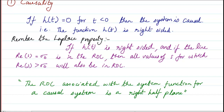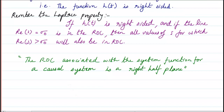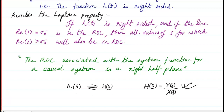That means the function h(t) exists only for positive values of t. From this, we can state: the ROC associated with the system function for a causal system is a right half plane. That means if we know h(s), we can just plot the ROC using the Laplace transform ROC concept and conclude if a system is causal or not without computing h(t).